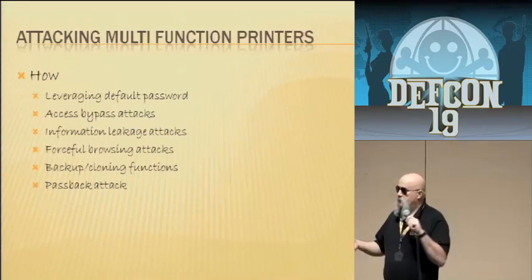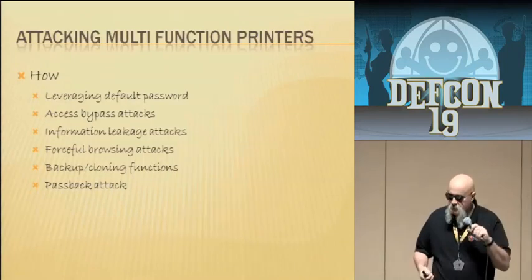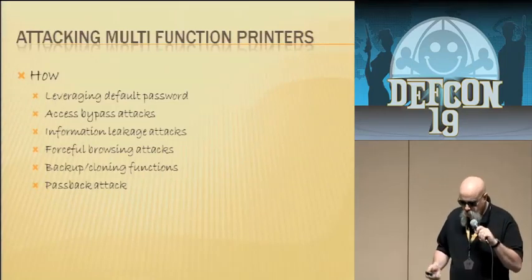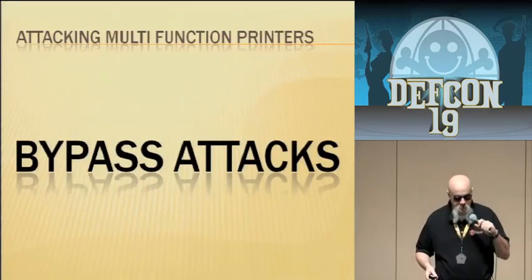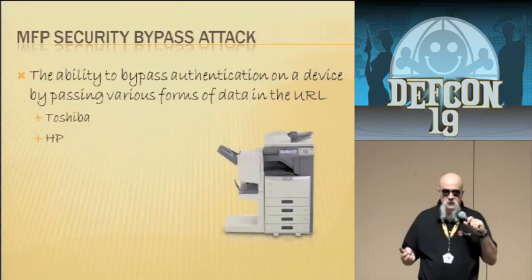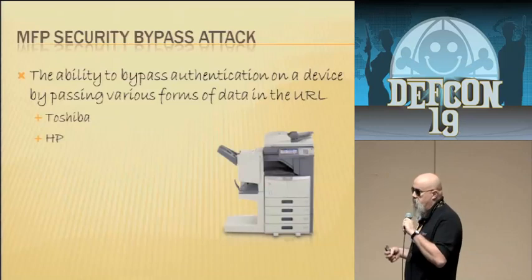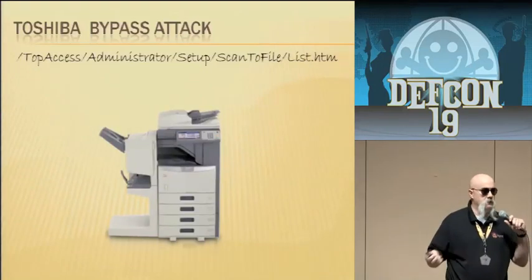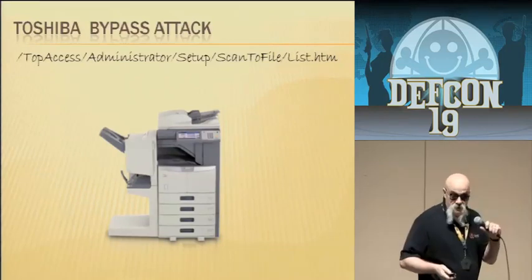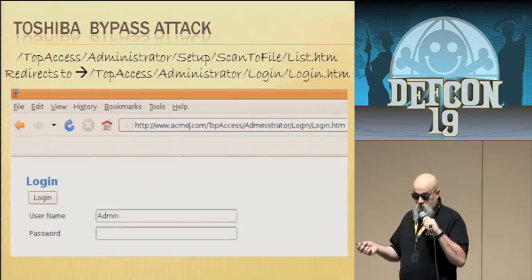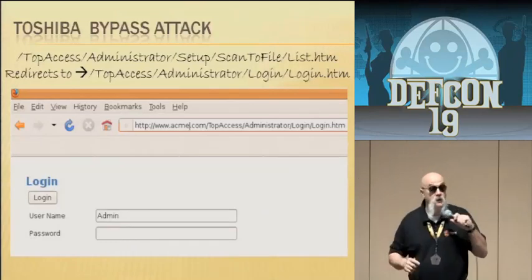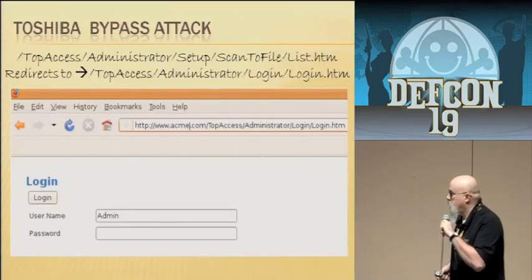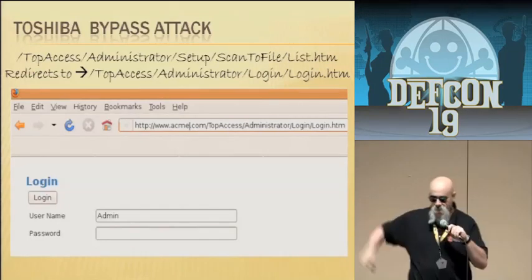So how are we going to do this? First, leveraging default passwords to get into the printer. Second, access bypass attacks — an attack where a password has been set but you've found a way to bypass all the security on the device and gain access. Third, information leakages — once we gain access, how do we extract data? Do these printers leak information? Fourth, forceful browsing — if you know the URL you want to get to, forget about the password; you just enter the URL and the printer gives you access. And of course, backup and cloning functions — pulling all those backups offline and extracting information from them. The last one is a passback attack — tricking that printer into sending the information to you.